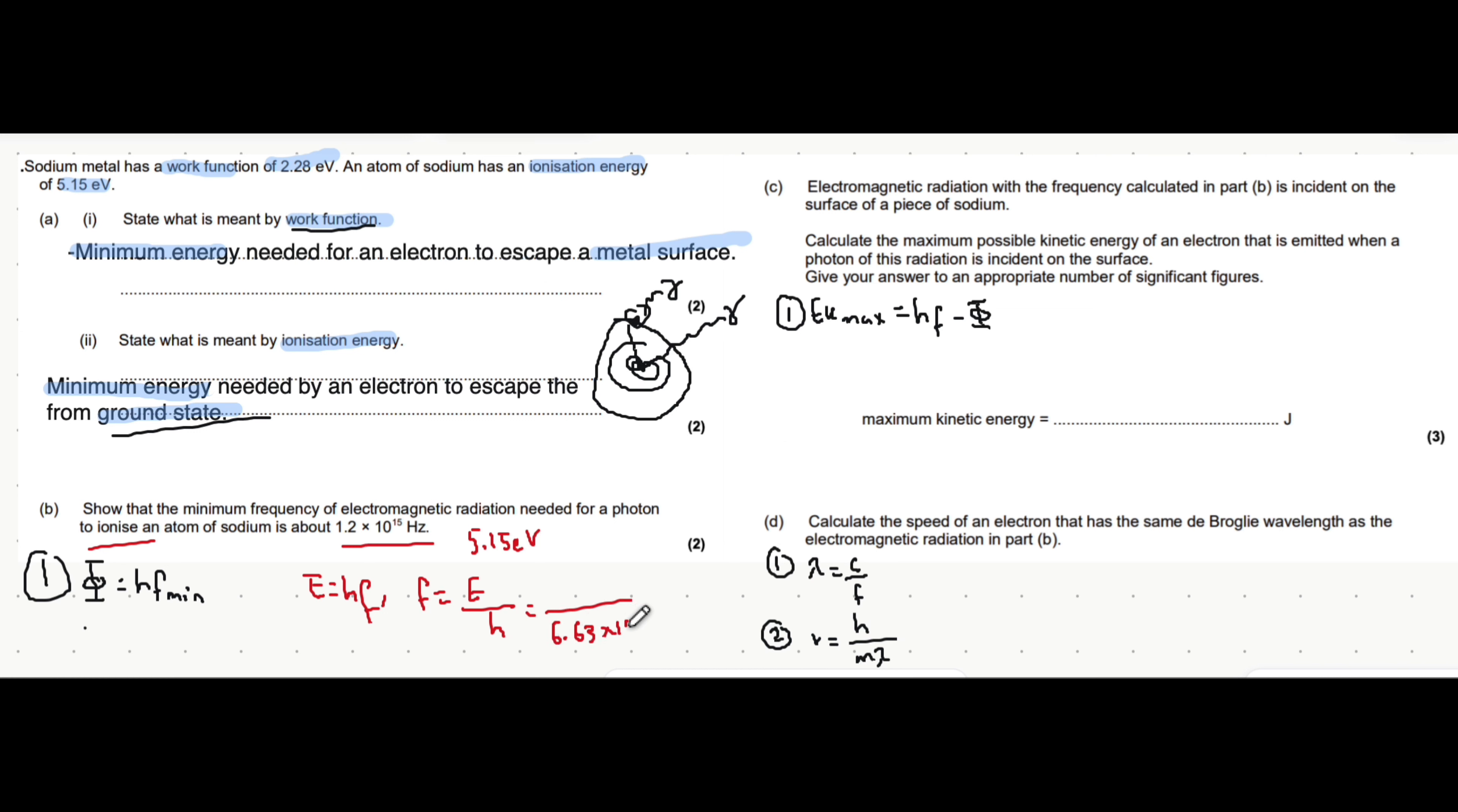Energy always has to be in joules, so we convert electron volts into joules by multiplying by 1.6 times 10 to the minus 19. If you put all of this into your calculator, you'll get 1.24 times 10 to the power of positive 15 hertz, which is the answer to part b.